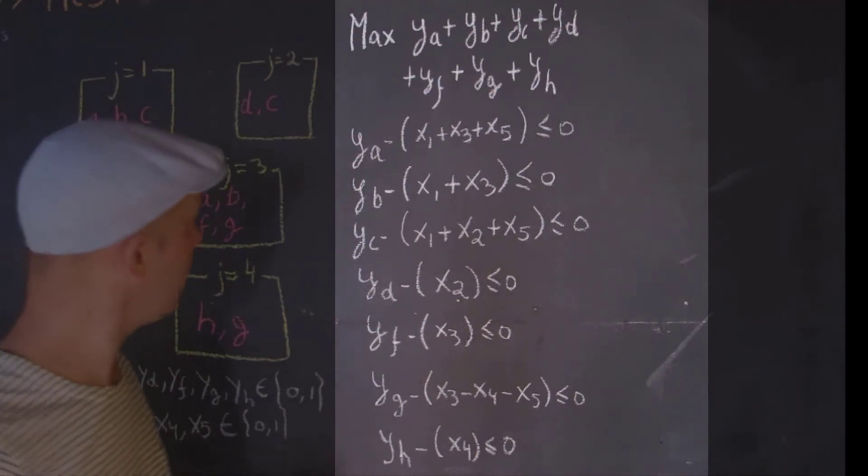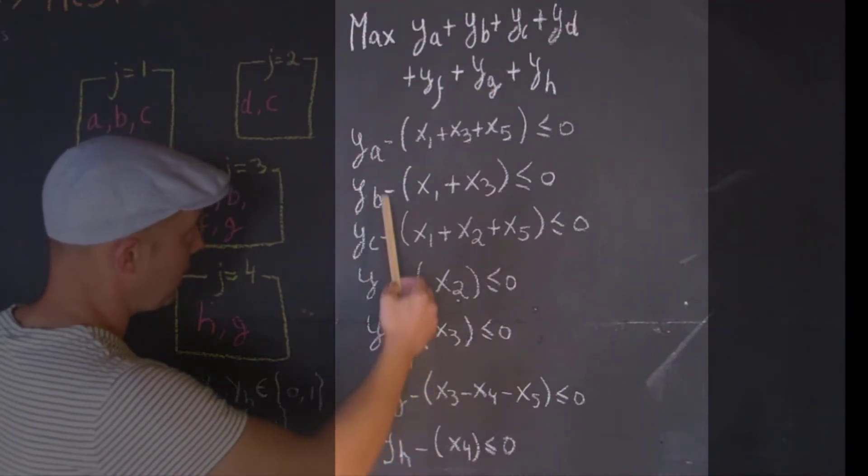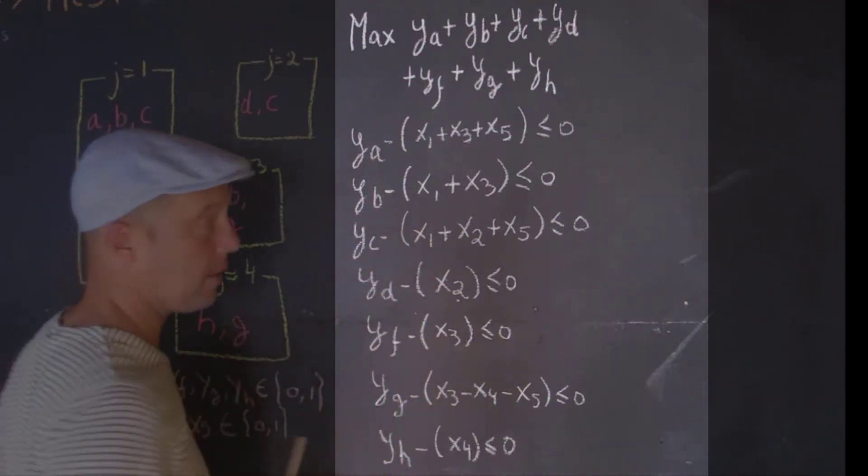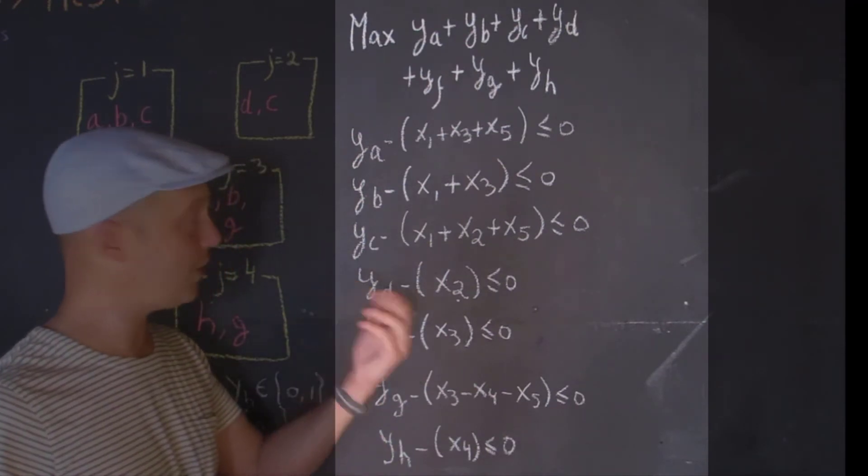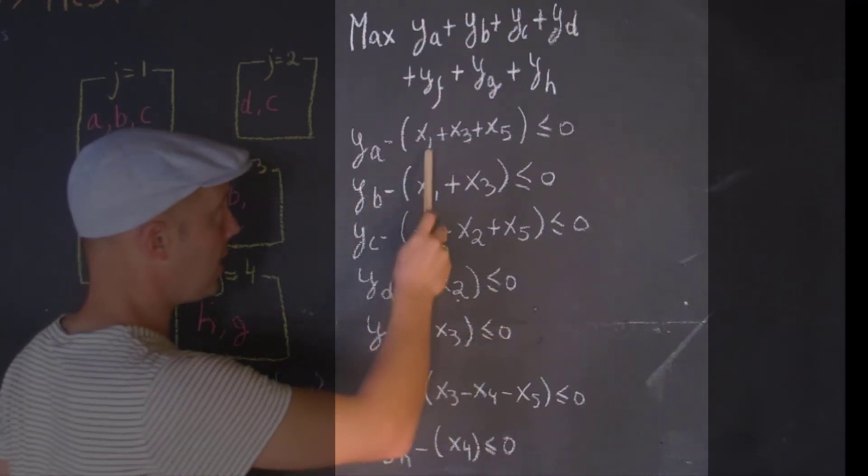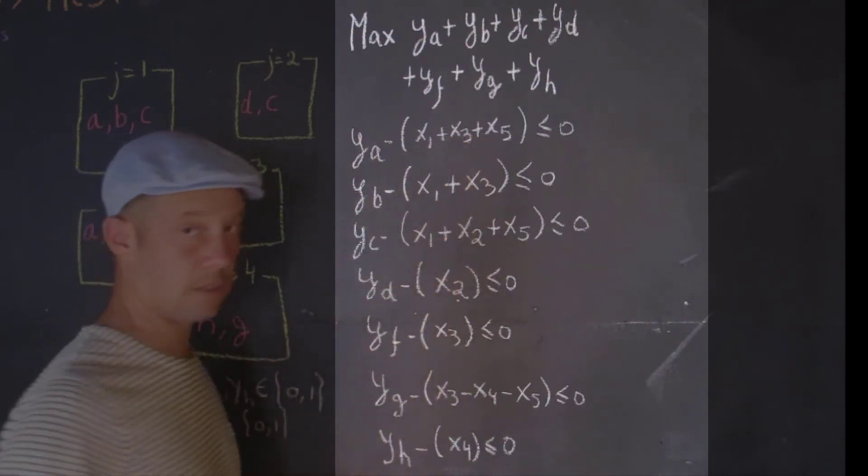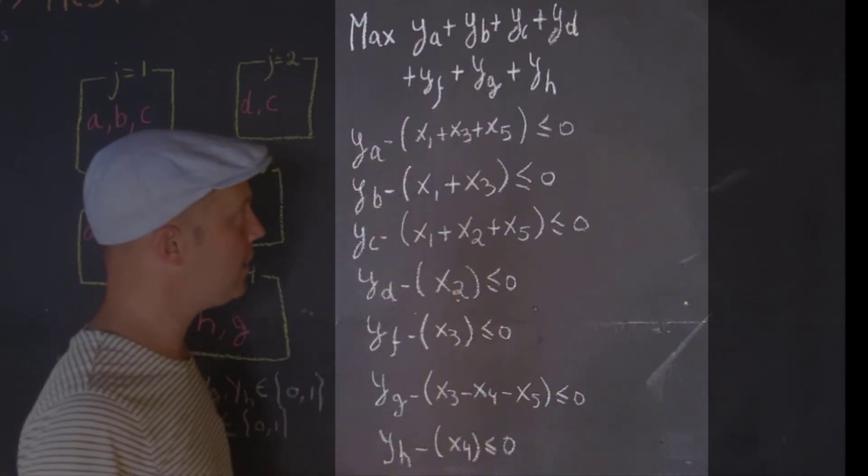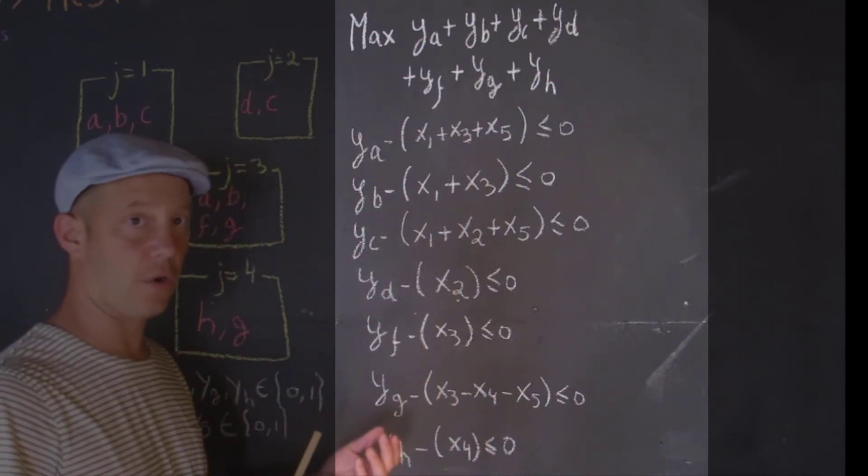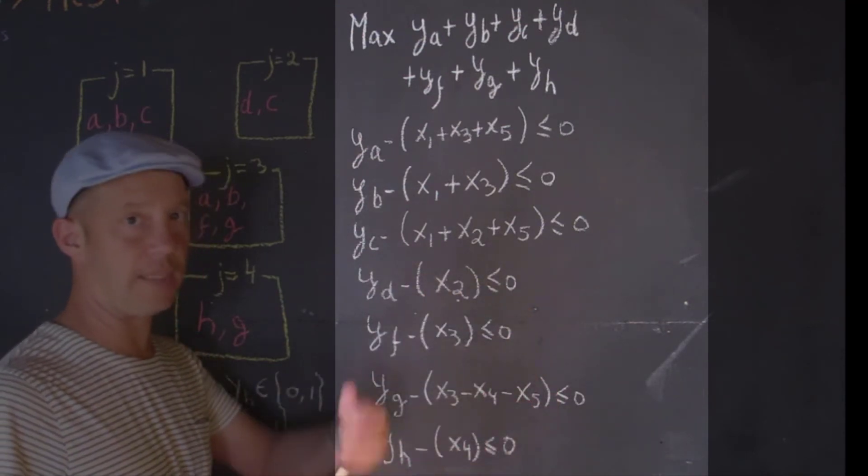So you would have here Y sub A minus X1 plus X3 plus X5 should be less or equal to zero. How do I interpret that? I'm basically interpreting it this way. I'm saying that if species A is to be preserved, but this is what we're trying to do, then at least one of these three parcels, at least one, it could be more, needs to be maintained or need to be purchased, or needs to open, essentially.